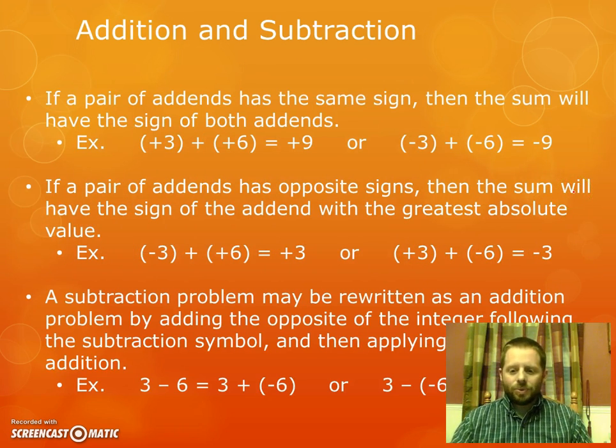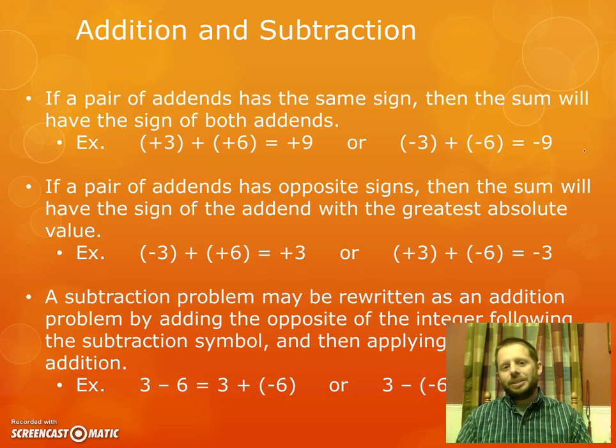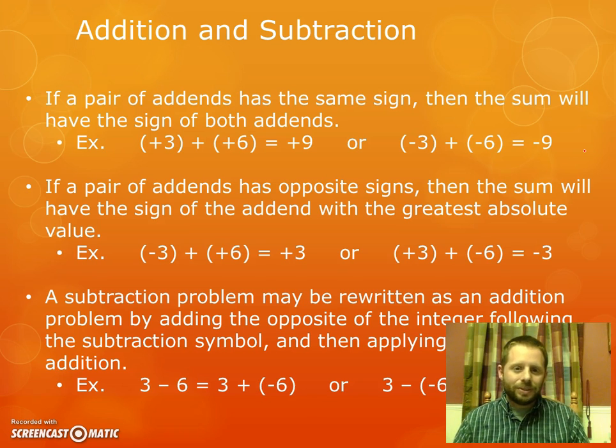Now, these are the actual rules that we use when adding and subtracting integers. I provide you the rule along with an example of each. So the first one says if a pair of addends has the same sign, then the sum will have the sign of both addends. So basically, if I add two positive numbers together, I should get a positive result. Or if I add two negative numbers together, I should get a negative result. That would make sense if you think of it in terms of like money. If you owe somebody $3 and now you owe them six more dollars, you don't all of a sudden have money, right? You just owe more money. So you would owe $9. That's the idea there.